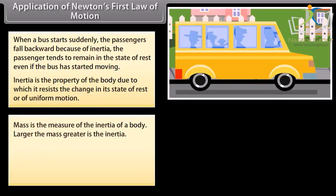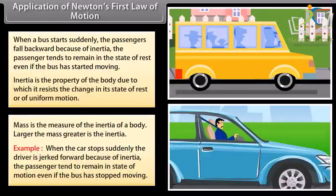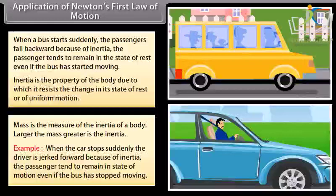Mass is the measure of the inertia of a body. Larger the mass, greater is the inertia. Example: when the car stops suddenly, the driver is jerked forward because of inertia. The passenger tends to remain in state of motion even if the bus has stopped moving.